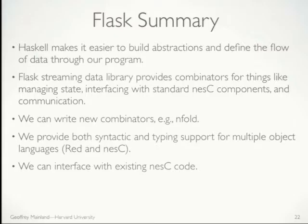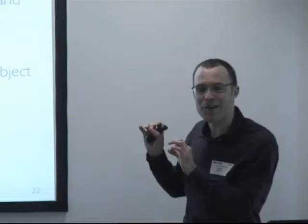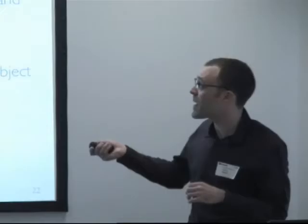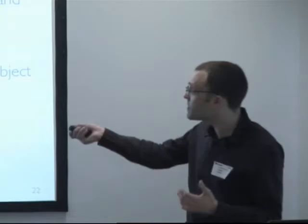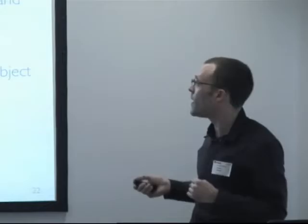To summarize: Haskell lets us build nice high-level abstractions that define how these dataflow components fit together. The Flask library provides combinators for managing state, interfacing with Nessie and legacy code — the same kind of combinators seen in Yampa, but usable on sensor nodes. We can write new combinators like in-fold from the existing combinators — it's not a built-in primitive, but a reusable abstraction built from existing primitives. We provide syntactic and typing support for both RED and Nessie, and we can interface to legacy code.